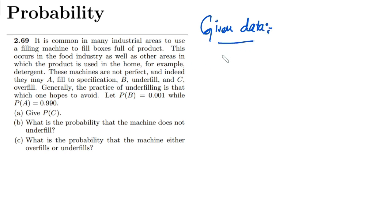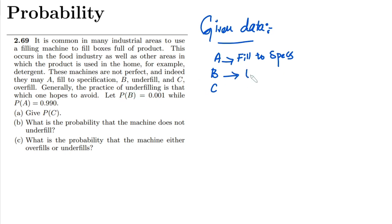We may categorize or classify the overall detergents in the form of a, b, or c, where a is filled to specifications, b is underfill, and c is overfill.